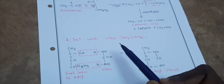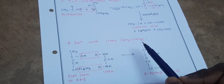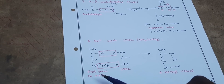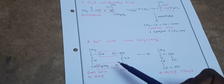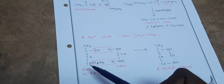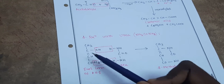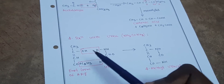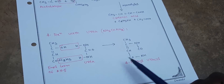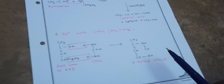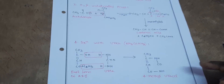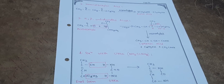Next: reaction with urea (NH₂–CO–NH₂). The enol form of acetoacetic ester reacts with urea. One mole of ethyl alcohol and one mole of water are eliminated, and bonds form at particular positions to give the cyclic product 4-methyluracil. That's it for today — if you like the video please like, share, and subscribe to the channel Sushrita. Thank you, bye bye, meet you in the next video.